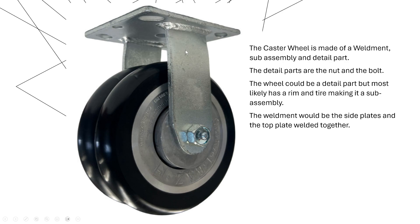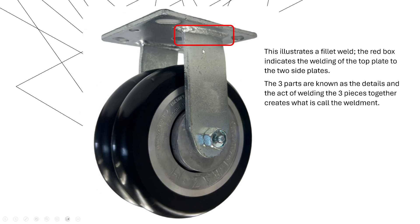Once we create that weldment, it doesn't come off. An assembly is something you can take apart — if I took this bolt off I could disassemble it. But we're not really able to take off this weldment, so it becomes a more permanent part. When I take three pieces and weld them together, it is called a weldment — this fillet weld right here is what creates this piece.